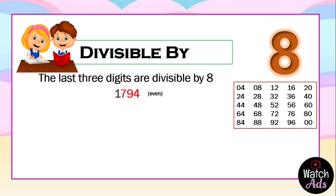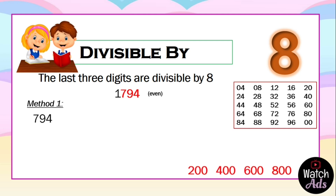I will offer you two methods; both will give you the same answer — either yes, it is divisible, or no, it is not divisible. For our first method, we have 794. Since we are talking about the last three digits, we will use the magic numbers: 200, 400, 600, and 800. These four numbers are exactly divisible by eight.